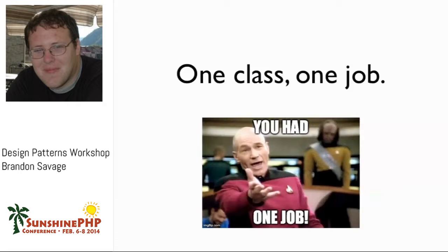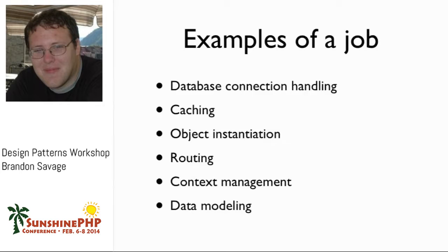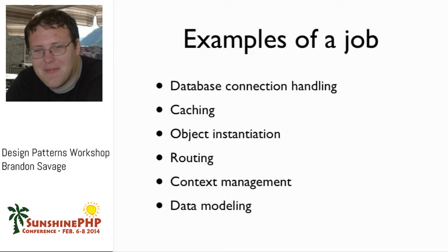Whenever I say one class, one job, somebody raises their hand and asks: what's a job? Here are some examples of jobs in an application. When you connect to a database and maintain that connection, that's a job. Caching is a job - caching should not be handled by your controller; your controller may invoke caching but doesn't know how the cache works. Object instantiation is a job - if you have the `new` keyword littered throughout your code, that's a code smell. Routing requests, context management, and data modeling are all jobs that objects do.